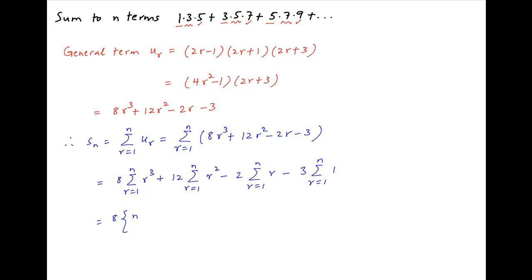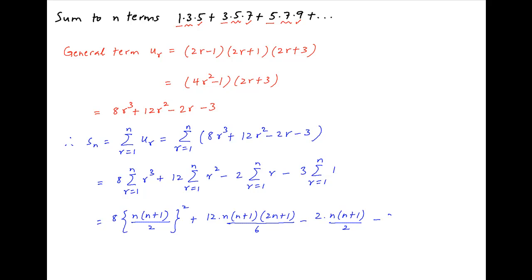Putting in the values of summation r³, summation r², and summation r, we get Sn equal to 8 times [n(n+1)/2]² plus 12 times [n(n+1)(2n+1)/6] minus 2 times [n(n+1)/2] minus 3n.